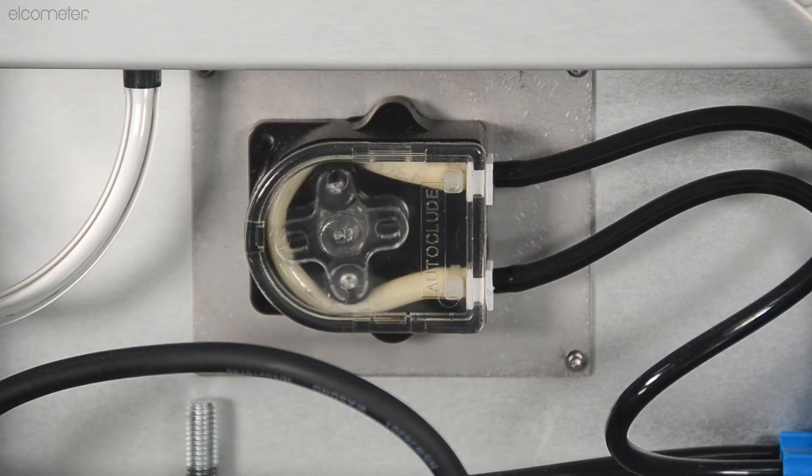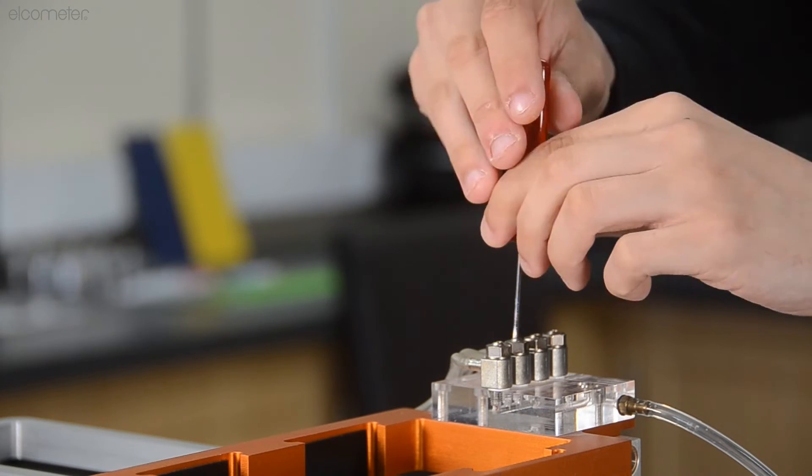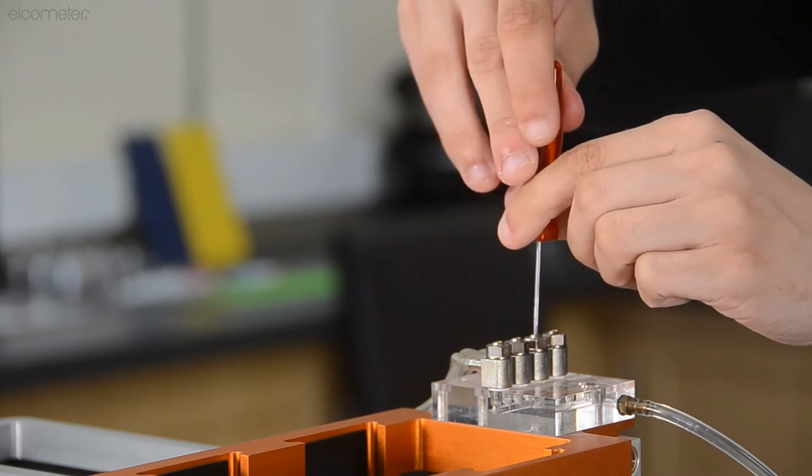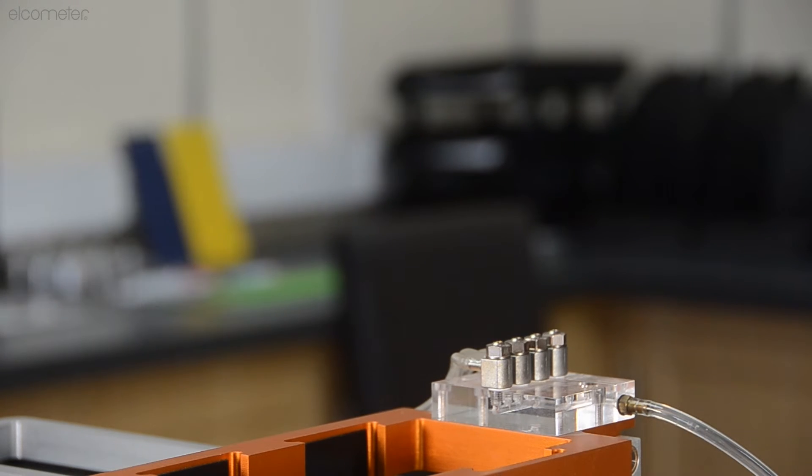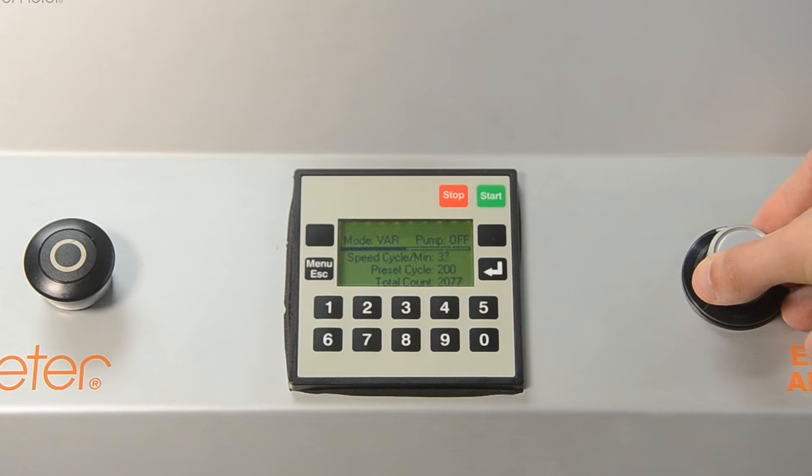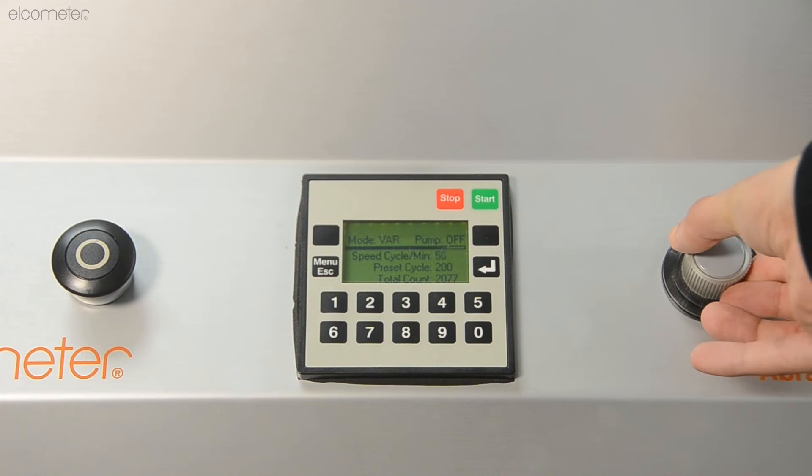Adjust the liquid flow rate by loosening and tightening the flow control valves, working back to front until the required drip rate is achieved. Input the speed and defined number of cycles using the buttons and dial.